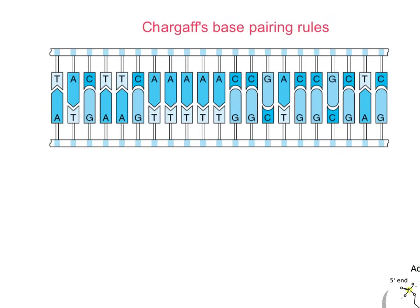Our nitrogen bases pair up A to T and C to G. Everywhere there's a T, it's paired with an A. Everywhere there's a C or a G, those two pair up. There are no exceptions to this — an A will never pair with a C, and A will never pair with a G. It is always A to T, C to G. One way to remember: A and T make the word 'at.' Letters with straight lines — A, T — go together; letters with curves — C, G — go together.